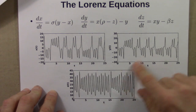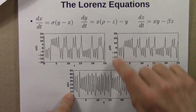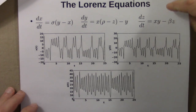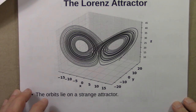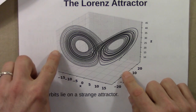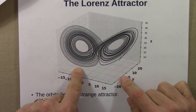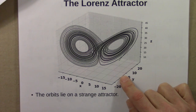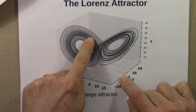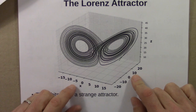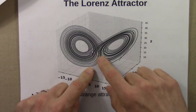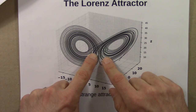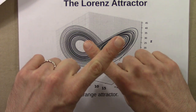We can plot x, y, and z against each other — plot this trajectory in a three-dimensional phase space — and if we do that, we get the Lorenz attractor. This orbit lies on a strange attractor. Similar to the Henon attractor, it's strange because it's attracting, and because motion on the attractor itself has sensitive dependence on initial conditions — the butterfly effect. Since this is a deterministic system, lines in phase space can't cross; it looks like they do, but that's because one is going over the other.